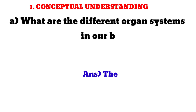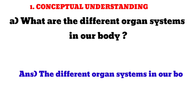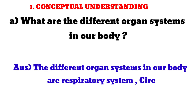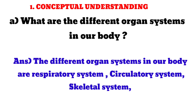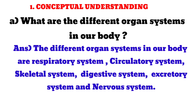What are the different organ systems in our body? The different organ systems in our body are respiratory system, circulatory system, skeletal system, digestive system, excretory system, and nervous system.